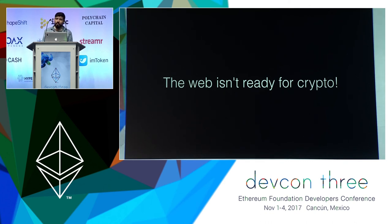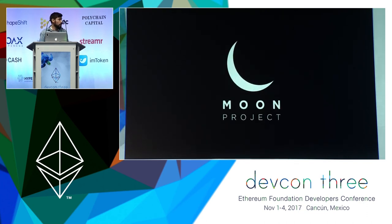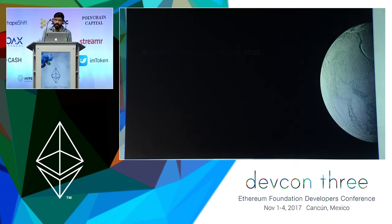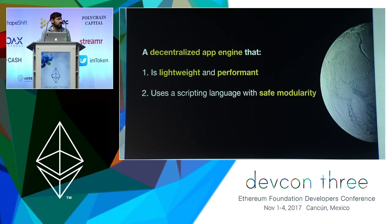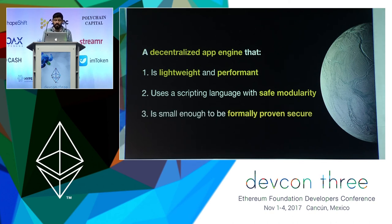What it needs is not another web browser, but a brand new thing made from scratch for the decentralized web. We need to answer the question: how would the web look if it came after Ethereum? To answer that, we started the Moon project. This is not another web browser, but an actual decentralized app engine that is lightweight and performant. It uses a scripting language with safe modularity so people can share code without needing to audit everything. That language is kind of like JavaScript but without the bad things. It's small enough to be formally proven secure — meaning a computer, not a human, can verify that the whole thing does not have a single vulnerability. And that's kind of a big deal.